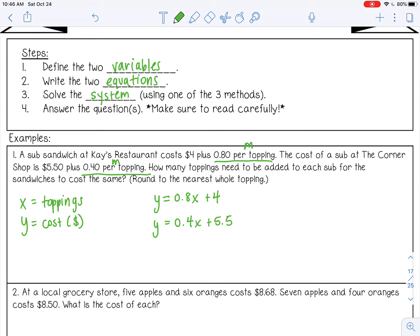How many toppings need to be added to each sub for the sandwiches to cost the same? So we are looking at when do these equations equal each other? Now a couple things you could do. You could graph these. But the slope for these are a little bit weird. They're not in fraction form like we are used to. So graphing might be a little bit difficult. You can always use a graphing calculator if your teacher allows that. But let's think about this algebraically.